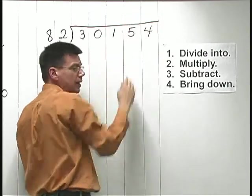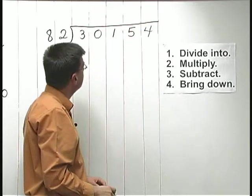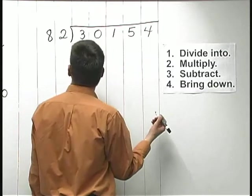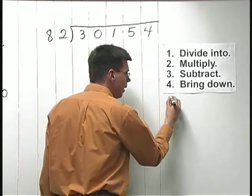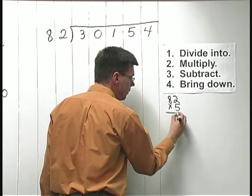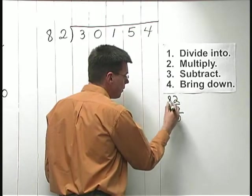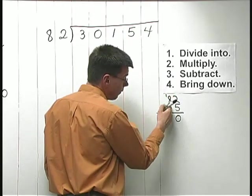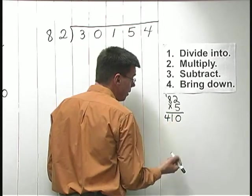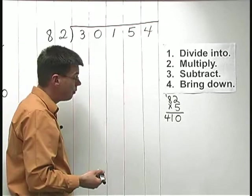How many times does 82 go into 301? Now, this is complicated enough that I'm going to have to make some guesses. And sometimes when I have no idea on where to start, I just check by taking 82 times 5 and see what happens. Now, 5 times 2 is 10. Write the 0, carry the 1. 5 times 8 is 40, plus 1 gives me 410. Well, too big, right? Way too big.